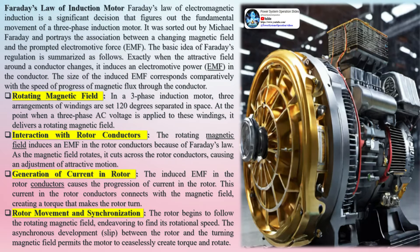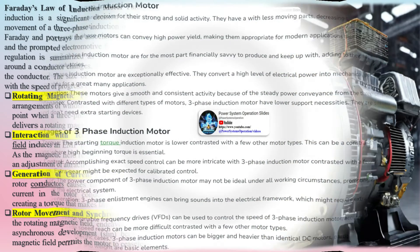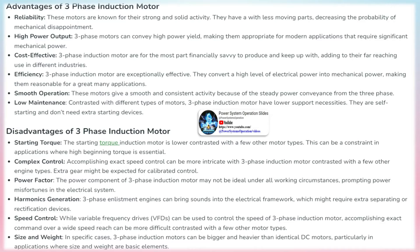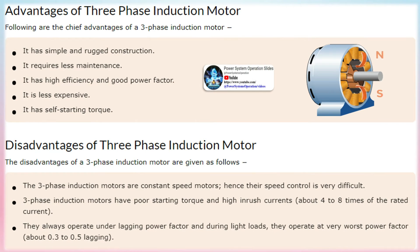Faraday's law of electromagnetic induction is a fundamental principle that governs the operation of a three-phase induction motor. It was formulated by Michael Faraday and describes the association between a changing magnetic field and the induced electromotive force (EMF): when the magnetic field around a conductor changes, it induces an EMF in the conductor, and the magnitude of the induced EMF corresponds proportionally with the rate of change of magnetic flux through the conductor. In a three-phase induction motor, three sets of windings are placed 120 degrees apart in space, and when a three-phase AC voltage is applied, they produce a rotating magnetic field.